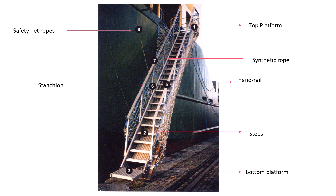Here is a cross-section and diagram of the accommodation ladder showing each part. Number one is the top platform. Number two is the steps of the accommodation ladder. Number three is the bottom platform, which is placed on the quay or jetty. Number five is the handrails, which you hold while coming down. Number six is the stanchions, which support the handrails and provide strengthening. Number seven is the synthetic rope safety net, and number eight is the safety net ropes. The safety net is provided in case the accommodation ladder breaks down or somebody falls.